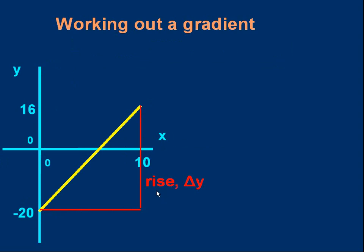We call the part of the triangle parallel to the y-axis, the rise. And it's showing us a change in the y-value. At the beginning the y-value is minus 20 and at the end it's 16. So the change is delta y. The bottom of the triangle is called the run. It's telling us a change in the x-value. We start off at the beginning of the yellow line x is 0 and at the end of the line x is 10. So it's telling us a change in the x-value. And the gradient is simply the rise divided by the run, or delta y over delta x.